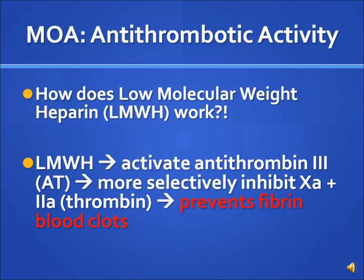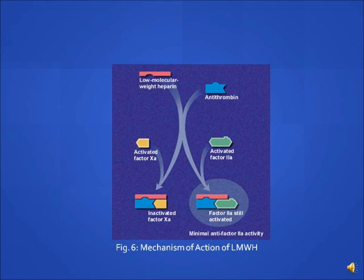So how does low molecular weight heparin work? The mechanism of action involves low molecular weight heparin binding to activate antithrombin 3 and facilitate its binding to inactivate factor 10a and factor 2a. The inhibition is more selective for factor 10a, resulting in prevention of fibrin blood clot formation. The size of low molecular weight heparin determines which factor it can inhibit more selectively. Factor 10a is fully inactivated because the heparin can cover both factor 10a and the antithrombin complex. However, factor 2a remains activated because low molecular weight heparin is not long enough to cover both factor 2a and the antithrombin 3 complex.